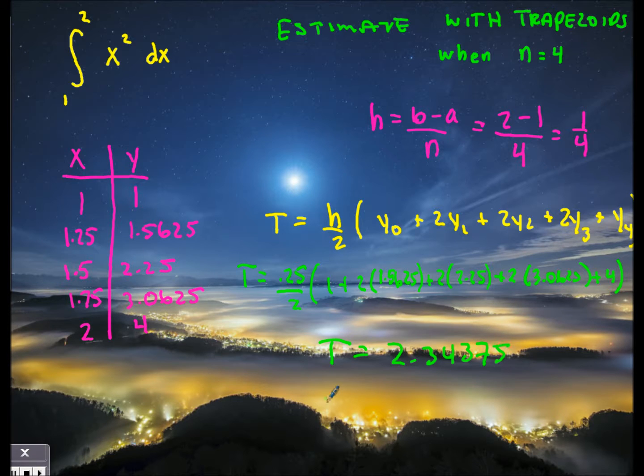So an estimation of the area under the curve of x squared from 1 to 2 using four trapezoids is 2.34375. Now of course you could also do this with the actual technique. So if you integrate x squared, you would have one third x cubed, and then you're going to evaluate that from 2 to 1. So you plug in the upper limit, one third 2 cubed, and you're going to subtract from that one third 1 cubed. And you'll get a final answer of 2.333. That's not too far off from the estimation that the trapezoid uses.